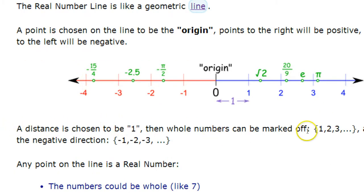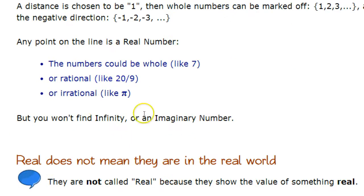A distance is chosen to be 1, then the whole numbers can be marked off 1, 2, 3, and they also can be read off in a negative direction. So everything could be just set up there.